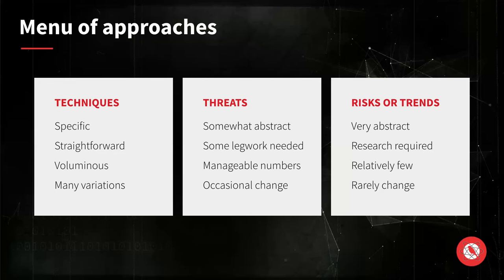Last on the menu are risks or trends. These are the most high level — things like ransomware, business email compromise. These are very high level and usually bring to bear a number of different threats, meaning different pieces of software the adversary uses at different stages of their intrusion. There are relatively few of these compared to the rest, and they rarely change. For better or worse, these can be a really useful starting point — something like ransomware is probably in everyone's threat model.